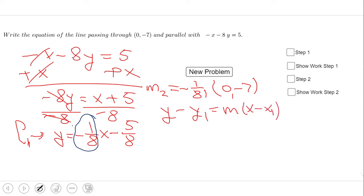As you notice, I'm using the point-slope form. In this form, we'll use the information we have: the slope of negative one-eighth and the point (0, -7).